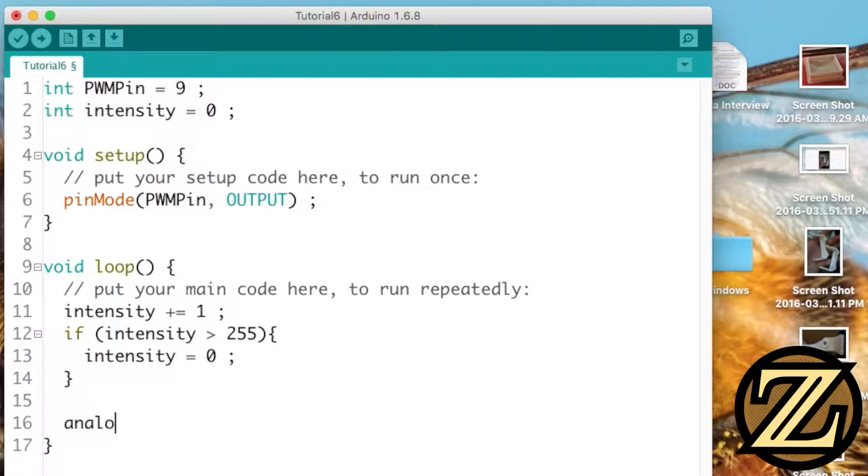Then we're going to use the function analog write and we're going to write to our PWM pin the intensity value that we have and then we're going to wait for 10 milliseconds. So what's going to happen here is our intensity value is going to increase and thus our analog write value is going to increase which will create a brighter LED until it resets back to 0.